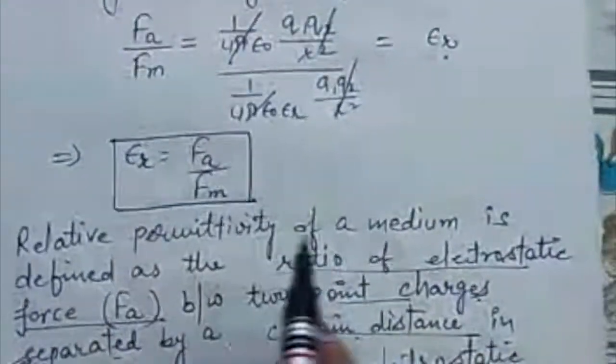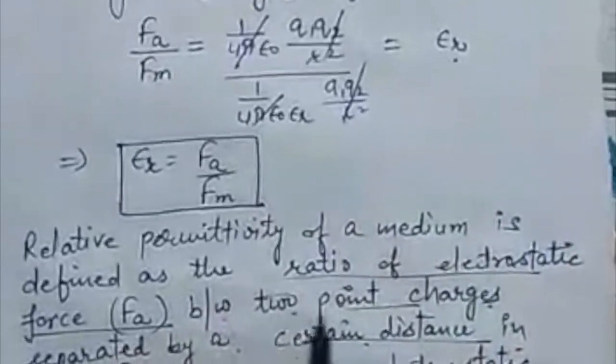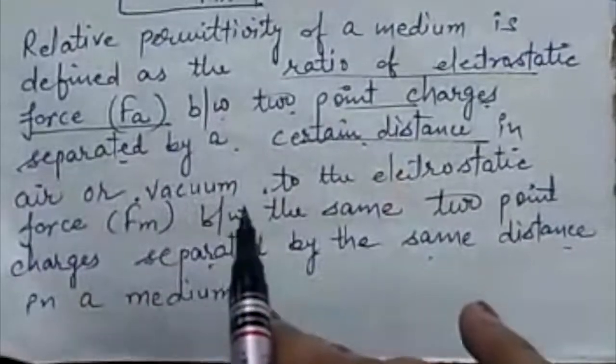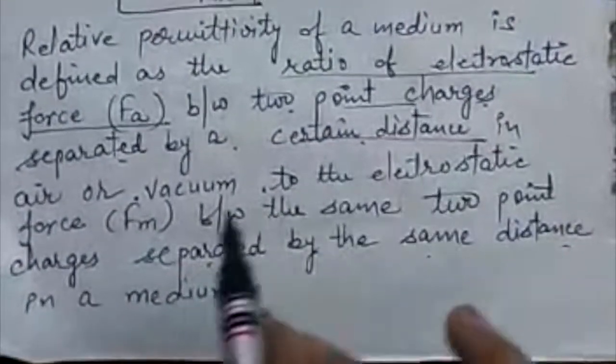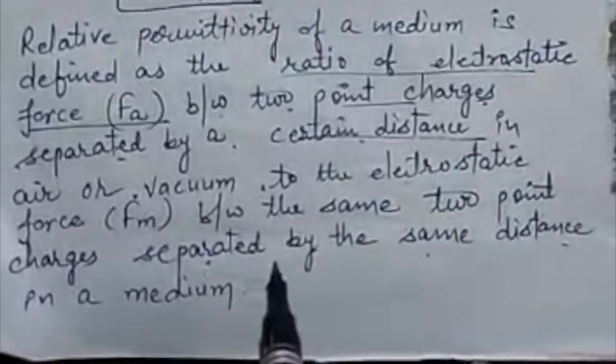Relative permittivity of a medium is defined as the ratio of the electrostatic force Fa between two point charges separated by a certain distance in air or vacuum, to the electrostatic force Fm between the same two point charges separated by the same distance in a medium.